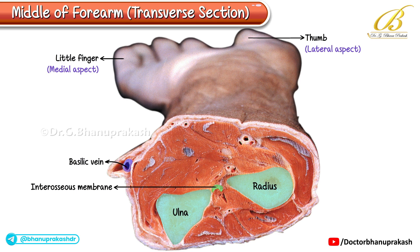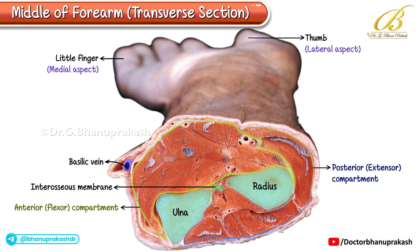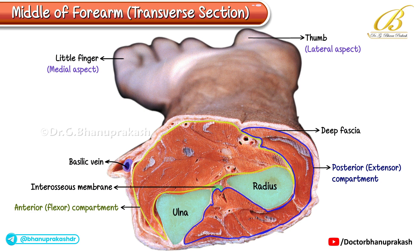The forearm is divided into two main compartments: the anterior flexor and the posterior extensor compartments. These are separated by septa derived from the deep fascia. Among them, the anterior compartment is noticeably bulkier than the posterior one.